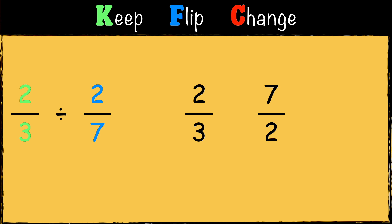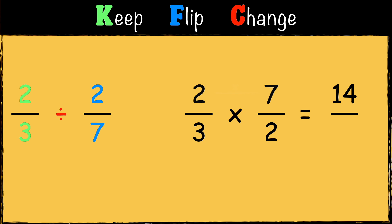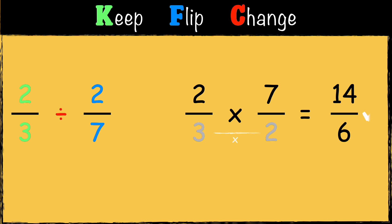Finally we have Change — we change the calculation from division to multiplication. Now we can multiply the fractions: two times seven equals fourteen, and three times two equals six. So the answer is fourteen-sixths.